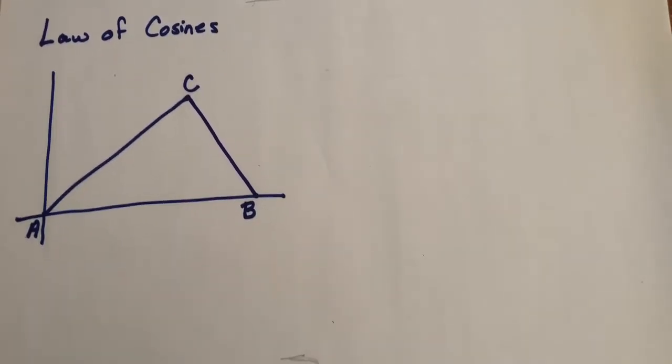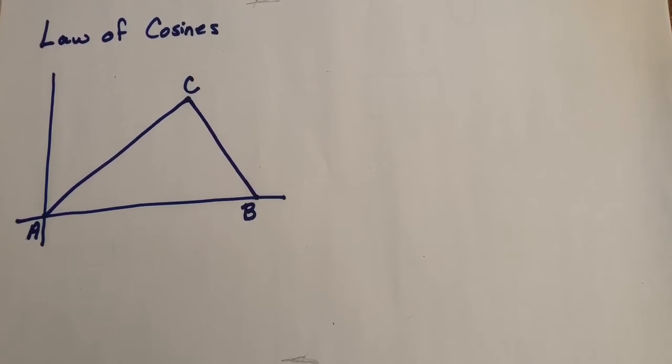As you know, we can use the law of sines sometimes to solve oblique triangles. Turns out that the law of sines is sometimes not enough. So we need another strategy to solve some triangles. We're going to talk about the law of cosines, and I want to show you where it comes from.